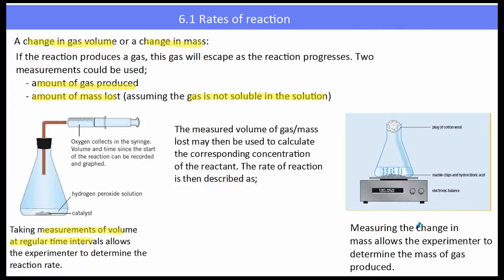If we are measuring the change in mass, we also need to take recordings at certain times so we can determine the mass of the gas produced. Once we have done those two things, we then need to convert either the volume of gas or the mass lost to the corresponding concentration of the reactant so we can describe the rate as the change in concentration over the change in time.